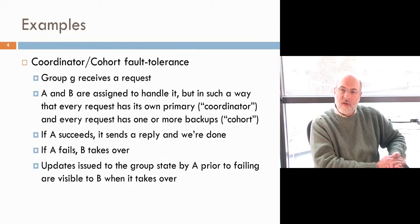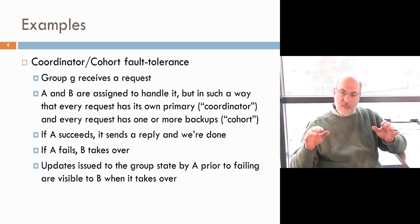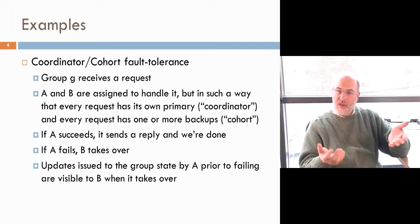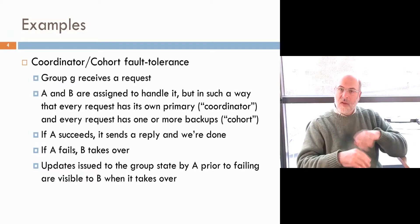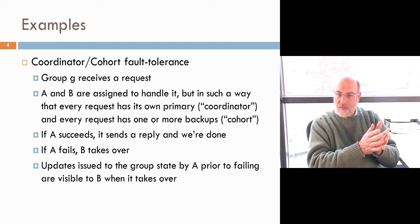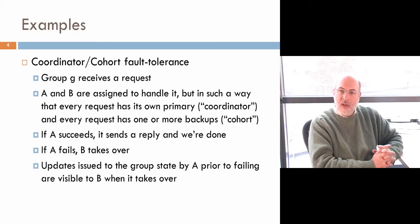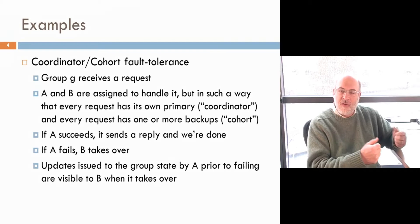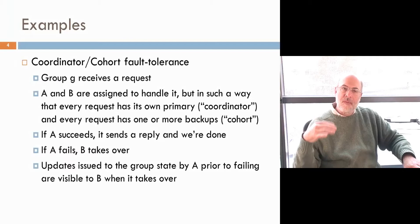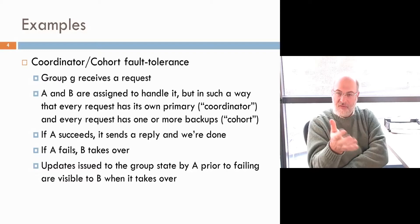A generalization that you can support in group communication systems is called coordinator and cohort, just mostly to distinguish the terminology. In this, you have an entire group, and the idea is that different requests load balance across the group. So each request that comes in has its primary and has its one or two backups, and it spreads the work around so that a primary for one request might be backing up other requests. It's a very popular scheme because you've got a group that instead of having the backup sitting idle, the backup is working just as hard as the primary but simply on other requests. And then you have to make sure that any updates to the group state reach all of the members, including messages that say, I finished doing such and such an action.